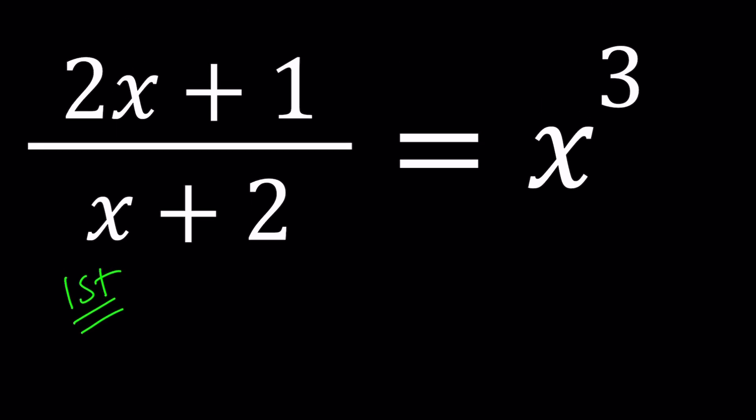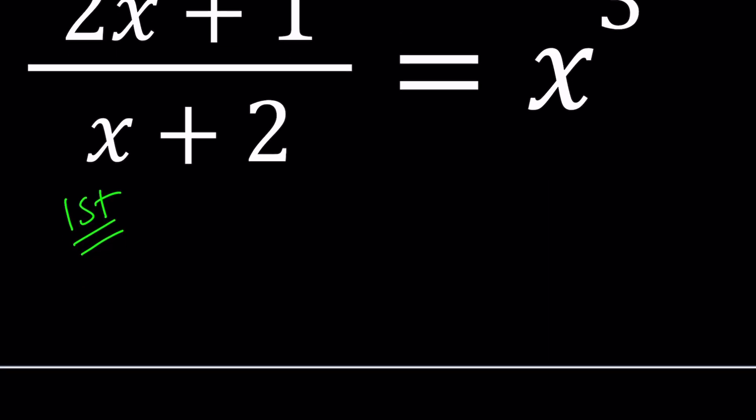For my first method, I will do what is obvious, cross multiply, and then solve the resulting equation. So we're going to multiply x cubed by x plus 2, x to the 4th, if you distribute x cubed here. We multiply these two things, x to the 4th plus 2x cubed equals the numerator, which is 2x plus 1. In other words, I'm multiplying the top and the bottom by x cubed.